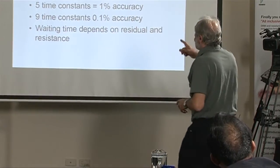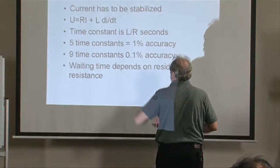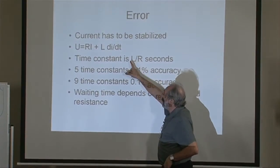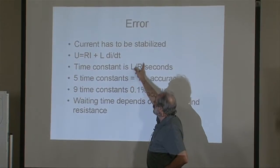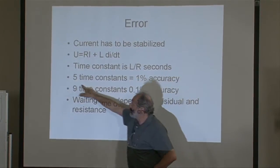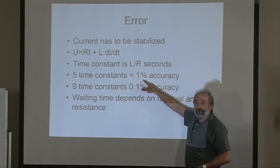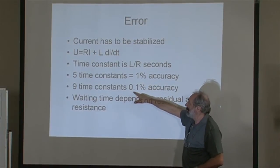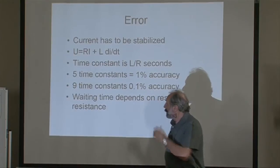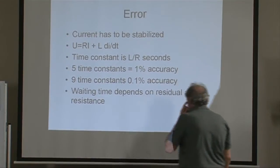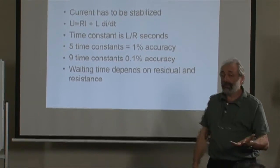Then you lower the inductance. I'll show you how you do that. But the important thing is, if this is my time constant: if I wait five time constants, I get one percent accuracy. If I wait nine time constants, it is 0.1 percent accuracy. And you know what?